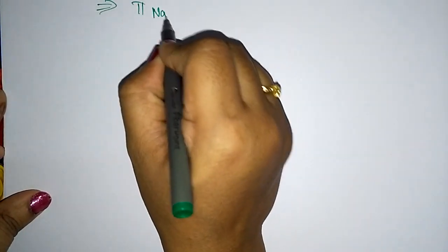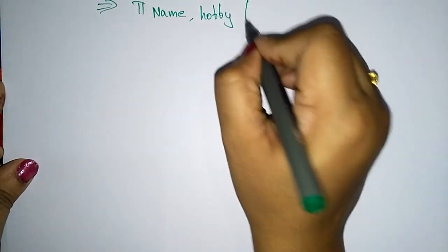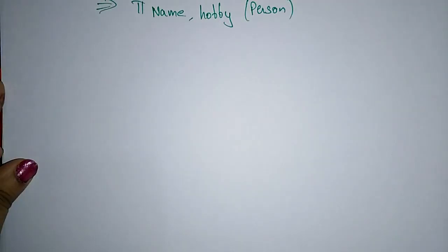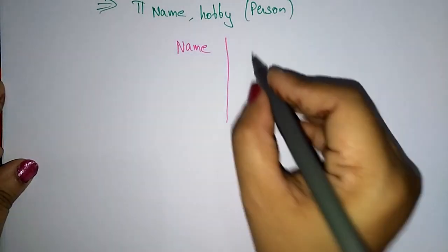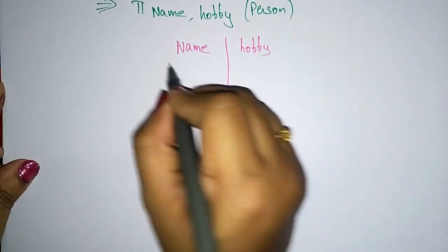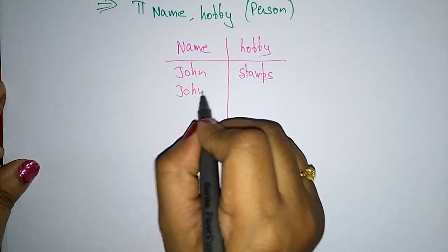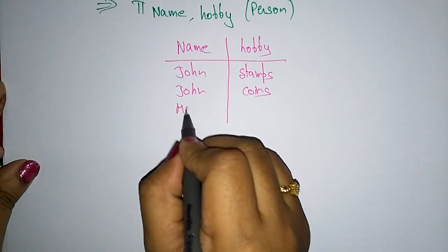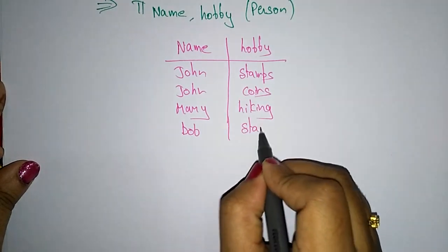For projection, I have to select the columns. The query is: pi name, hobby from person. You will get only these two columns from the table — all rows will be selected but only those two columns. The output is: John stamps, John coins, Mary hiking, and Bob stamp collection. So this is selecting the columns — this is about the projection.